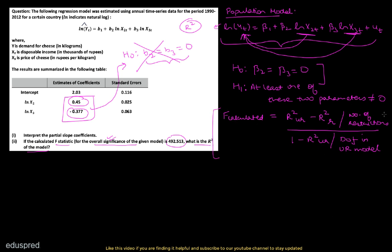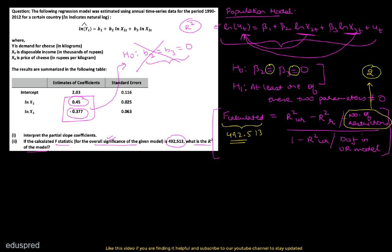We are given that F-calculated equals 492.513. To count the number of restrictions in the null hypothesis, count the number of equal-to signs. We have 2 equal-to signs, so the number of restrictions is 2. Do not count the number of parameters — count the equal-to signs in the null hypothesis to get the correct number of restrictions.